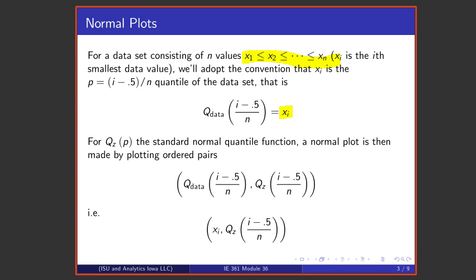So if I have, for example, 10 values, I put them in order, smallest to largest. If I grab the third, so i is 3, i minus 0.5 over n is 3 minus 0.5 over 10. So we're going to call that the 0.25 quantile of the data set.